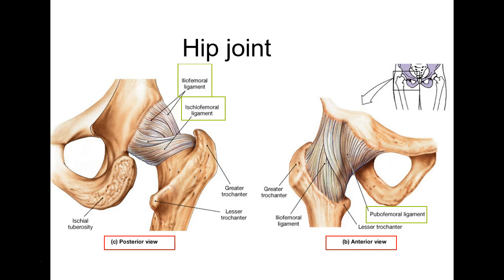For the hip ligaments the naming-the-bones trick works well. Going from the ilium to the femur: iliofemoral ligament. Going from the ischium to the femur: ischiofemoral ligament. Going from the pubic bone to the femur: pubofemoral ligament. Just name which bones are connecting and you'll get all three right.